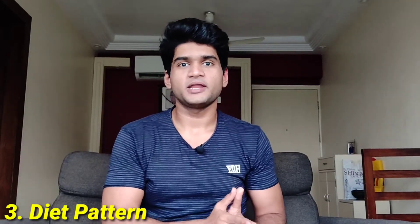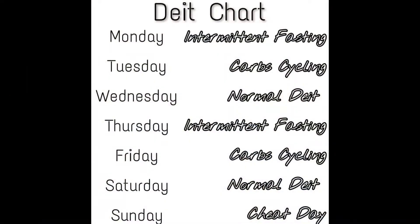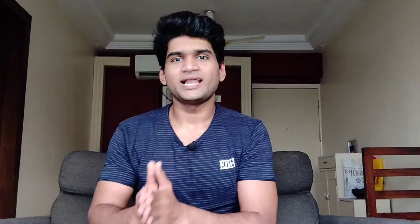Moving to point number three — the diet chart you need to follow to create a perfect calorie deficit. As you can see on screen: on Monday do intermittent fasting, Tuesday carb cycling, Wednesday normal diet plan, and Thursday-Friday-Saturday follow the same pattern again. Sunday is a cheat meal day. You don't have to follow this exactly — you can make changes — but the key point is to give at least two days in the week to each method. When you do intermittent fasting you save a lot of calories fasting for 16 hours and eating in an 8-hour window. With carb cycling, your carb intake goes down and calories are saved automatically. On normal diet days there are no restrictions.